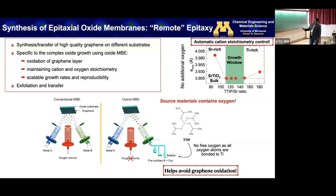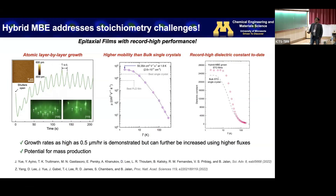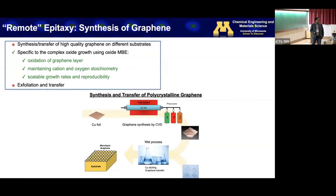Once we found this growth window, the quality of films grown using this hybrid approach is excellent. We have a record high electron mobility of about 50,000 cm²/Vs in STO thin films, and a record high dielectric constant in STO thin films using hybrid MBE, exceeding that of bulk — world records right now. The technique works. Now the question is: does graphene survive the process?